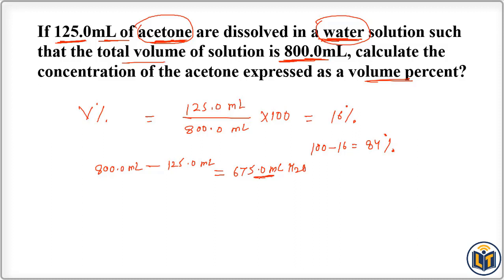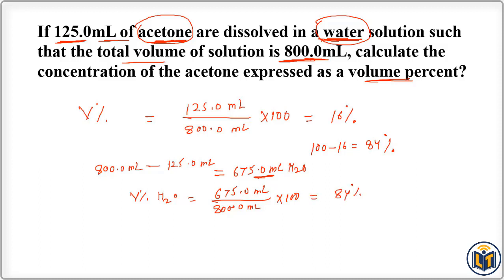This 675.0 ml is the volume of water in the solution. Applying the volume percentage formula for water: 675.0 ml divided by 800.0 ml, multiplied by 100, gives the same result — 84 percent. This confirms the volume percent of water, the solvent, in the solution.